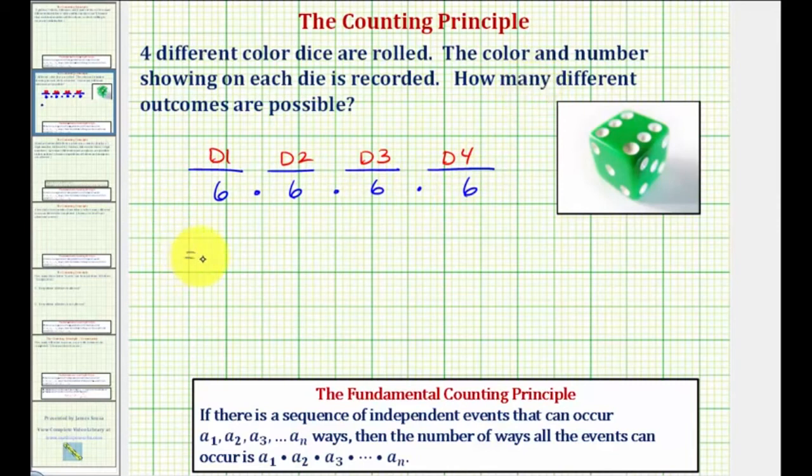Which is equal to six to the fourth, or 1,296. Which means, if four different colored dice are rolled, and the color and number are recorded, there are 1,296 possible outcomes.